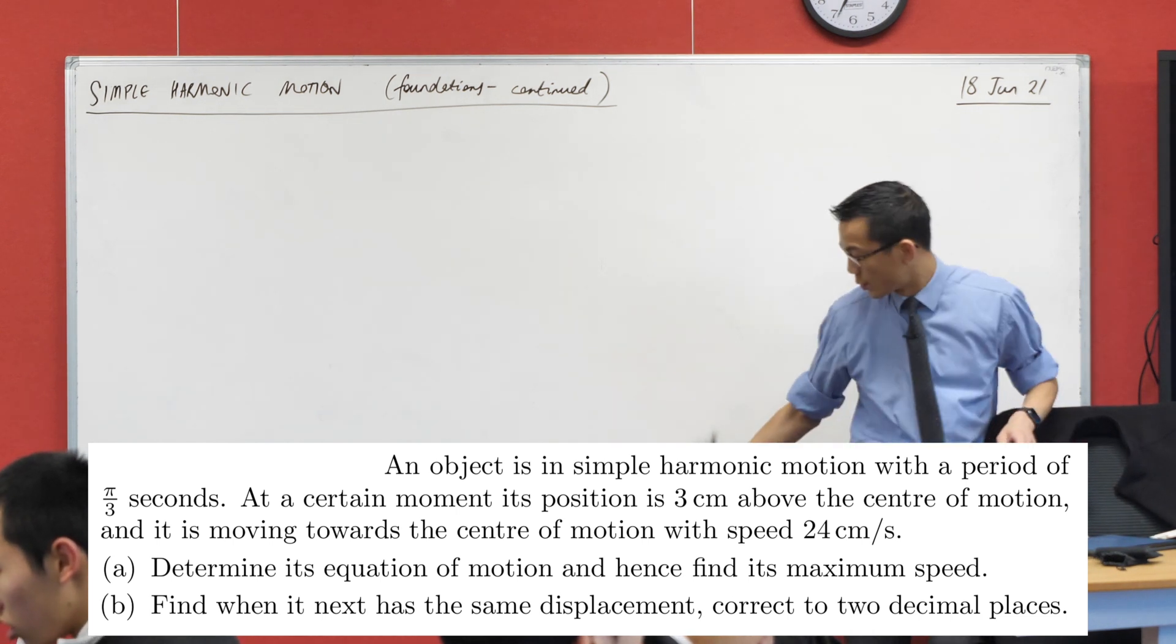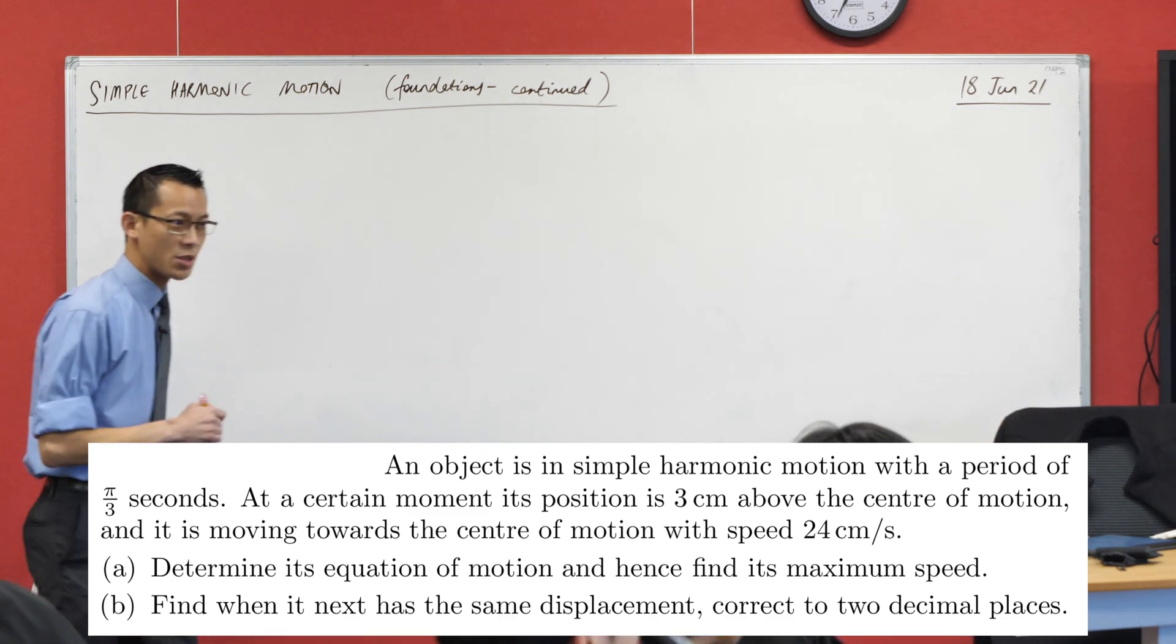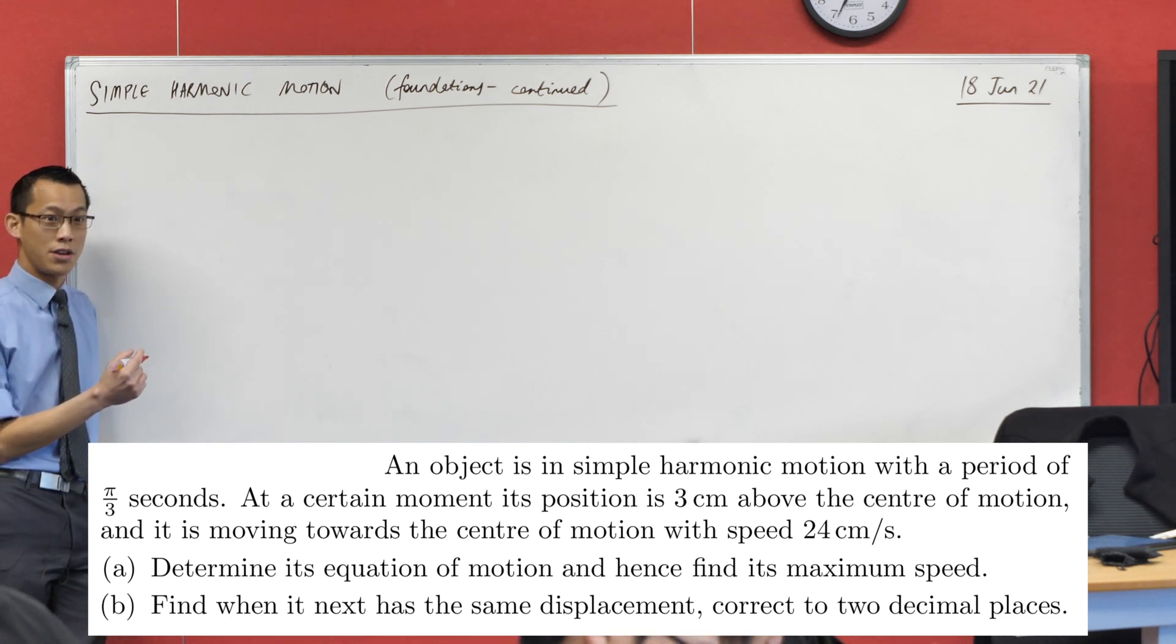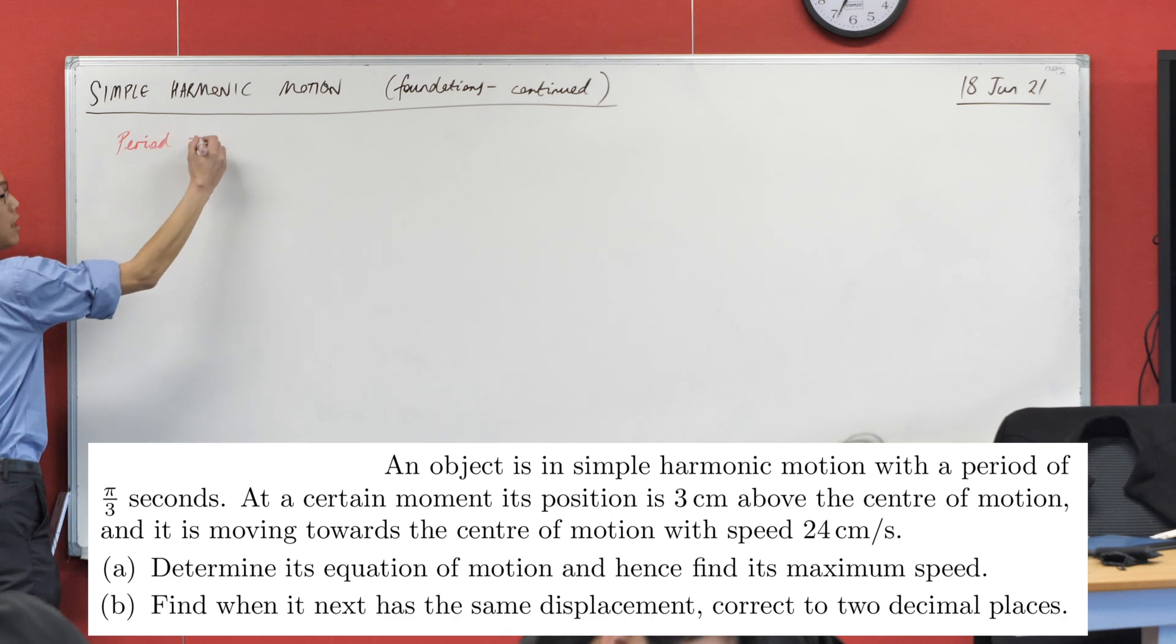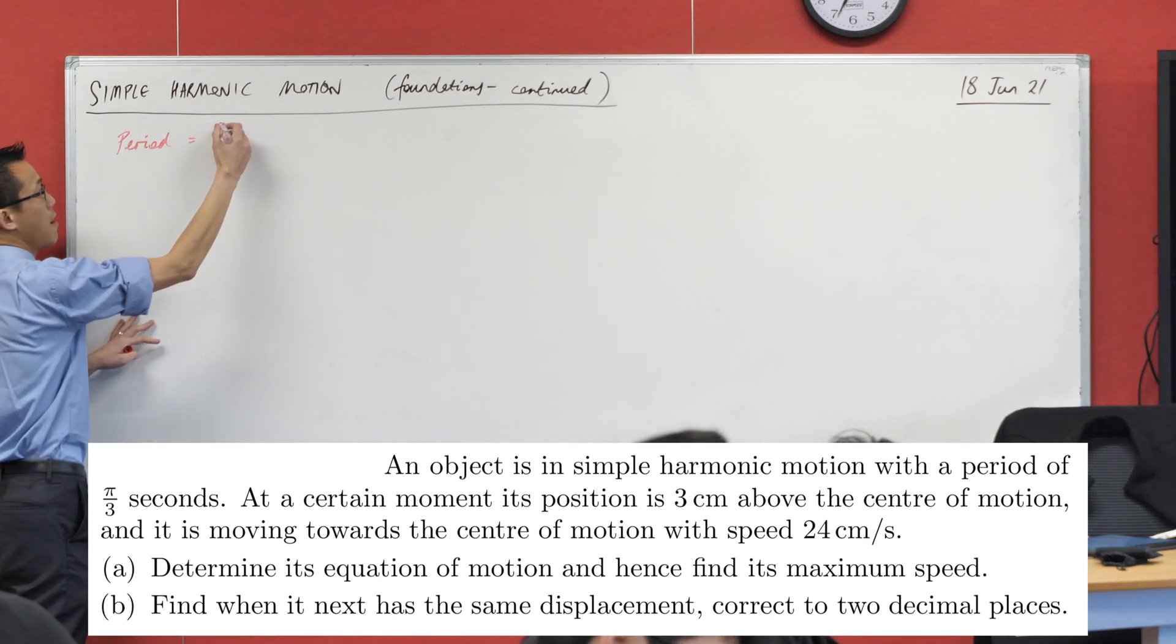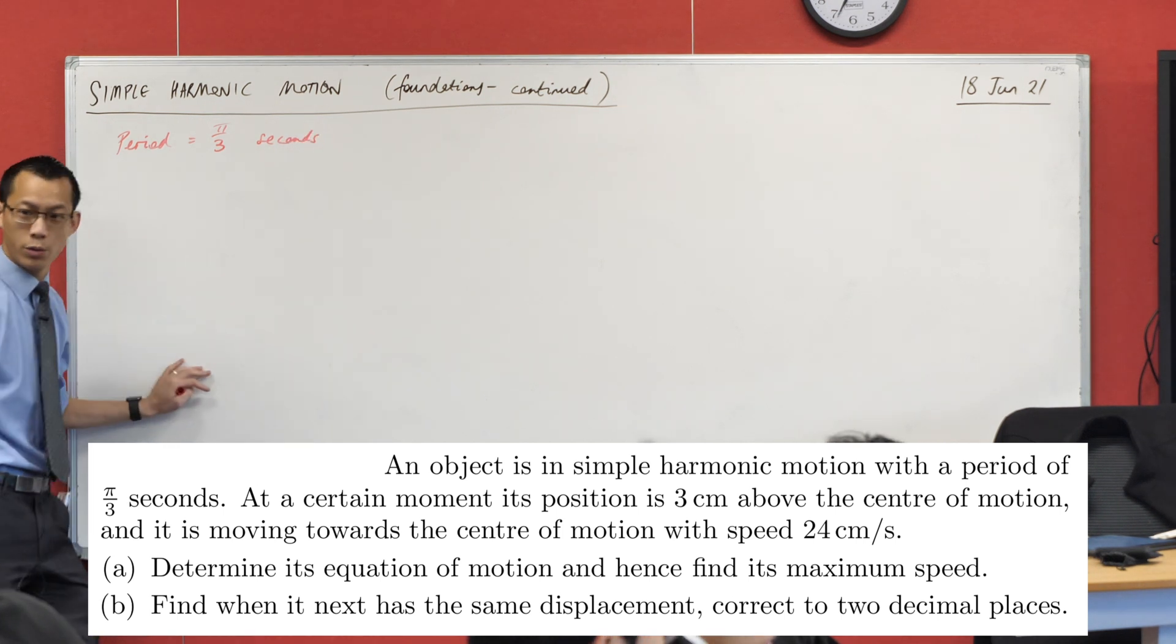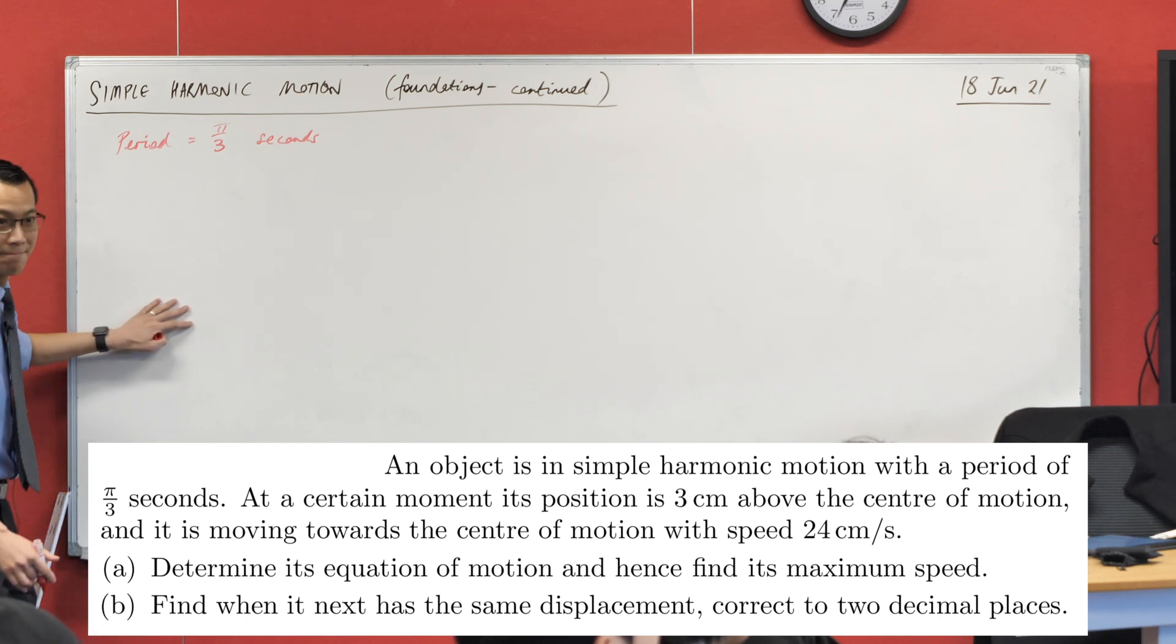Have a think about this, in fact what we'll do is we'll write them down together. Tell me what are the salient details, the important numbers that you need to take note of. What's the first number that you see which we need to include in our equation? The period. What's the period? π/3 seconds. So if you haven't by the way, jot this down all with me.